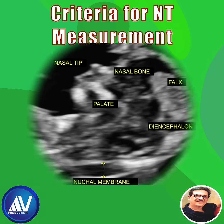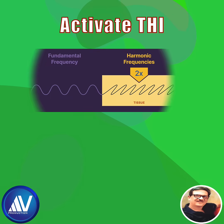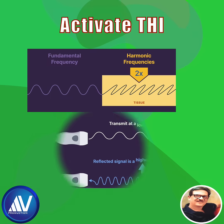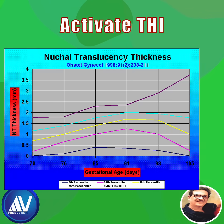This scan shows which structures must be seen: nasal tip, nasal bone, falx, palate, diencephalon lucency, and membrane. Activate THI — tissue harmonic imaging — as it enhances nuchal translucency, improving image clarity. NT normograms showing the 5th and 95th percentiles are also available for reference.